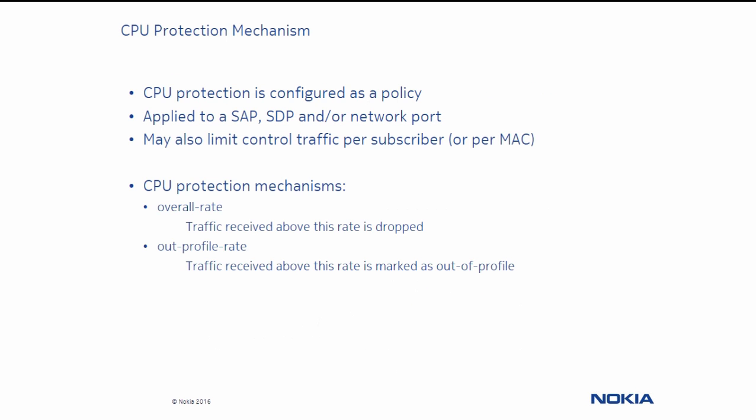CPU protection is configured as a policy, then applied to a SAP, SDP, or network port. We specify the overall rate in the policy, and traffic received above this rate is dropped. We also specify an out-of-profile rate in the policy, and traffic received above this rate is marked as out of profile, which means the traffic is given a lower priority. The Nokia 7750 service router can also rate limit on a per subscriber or MAC address.